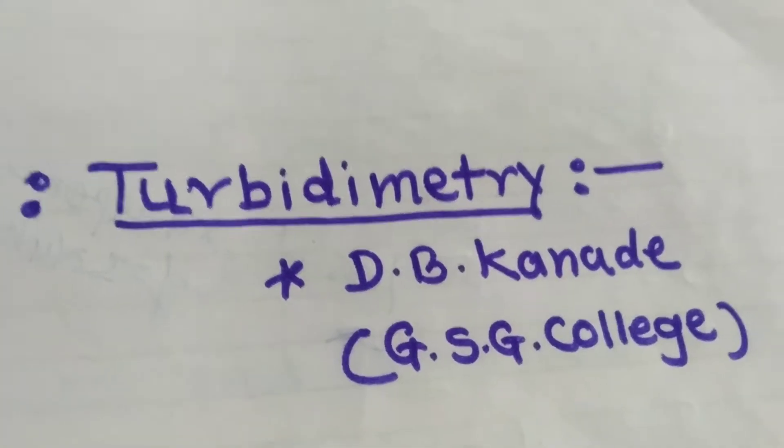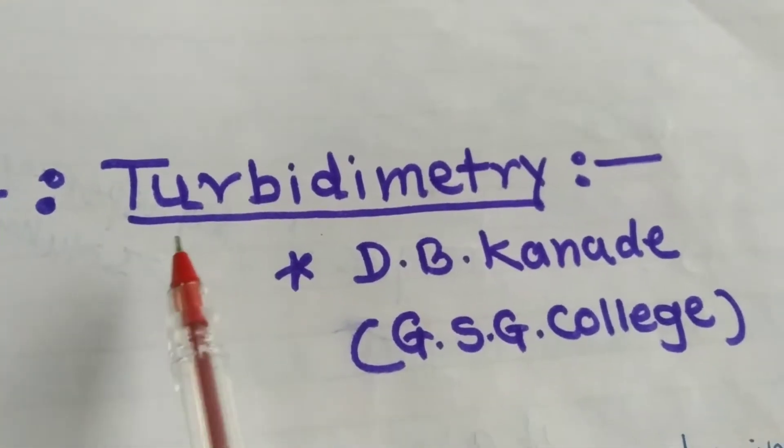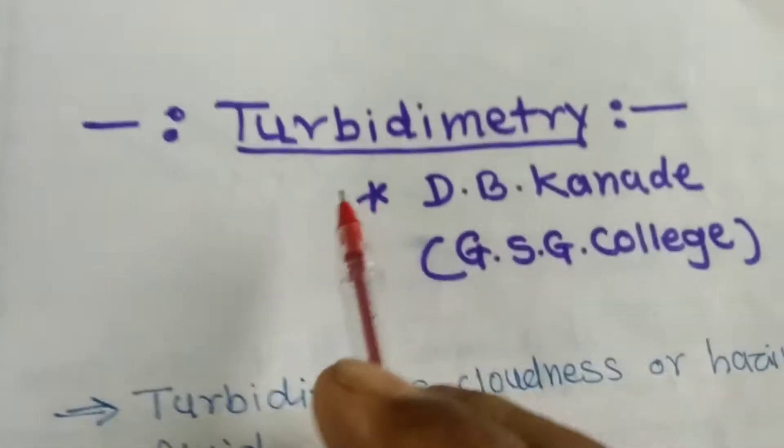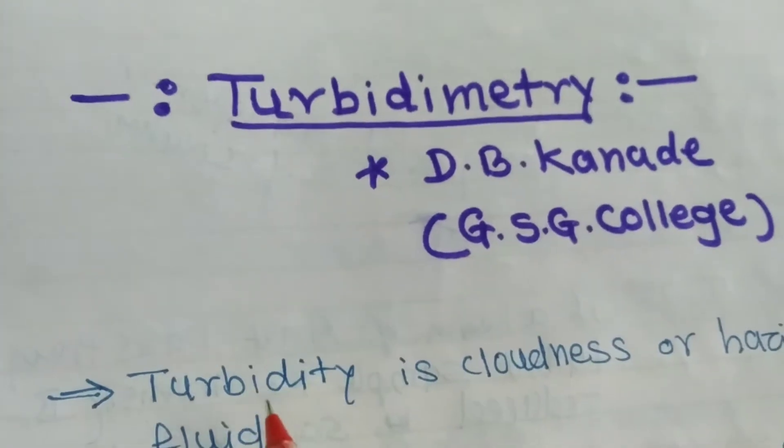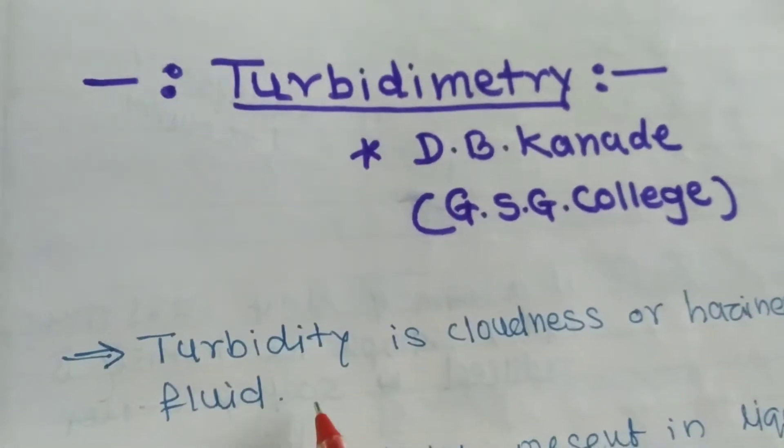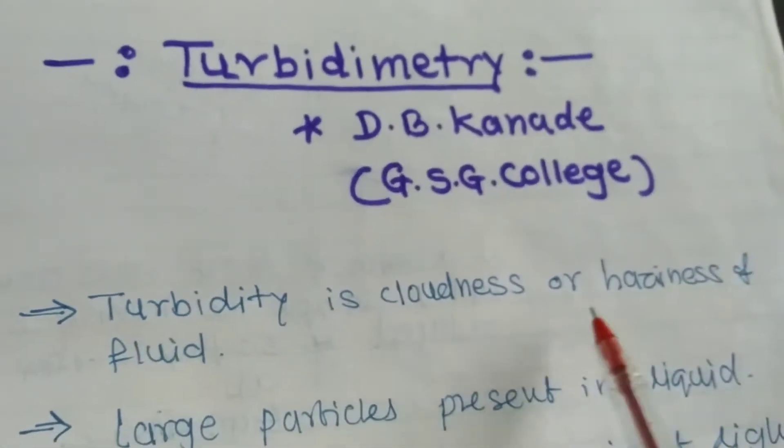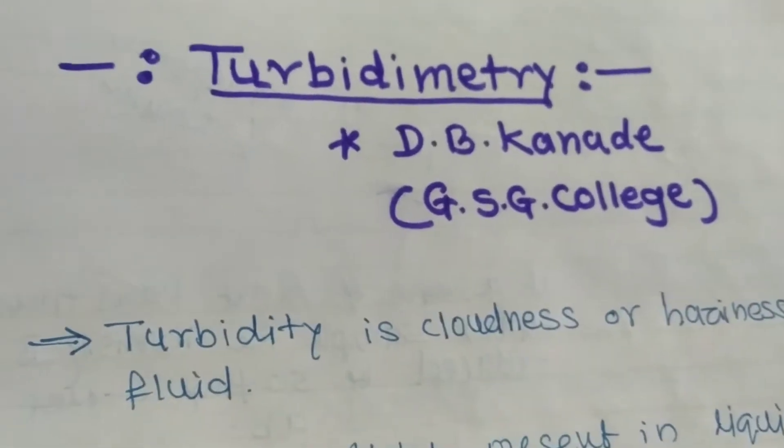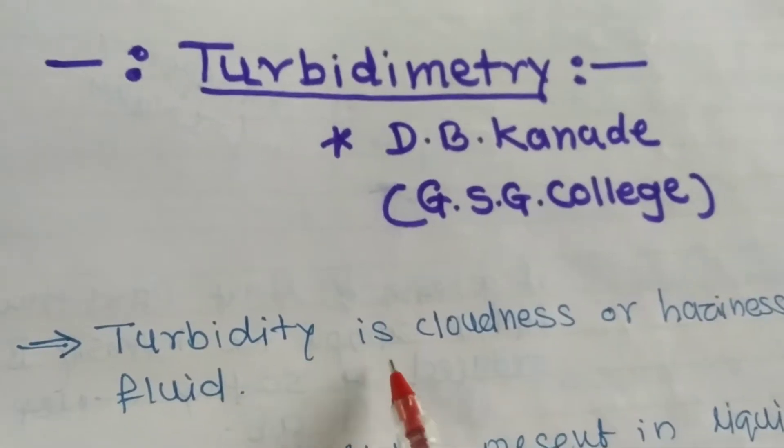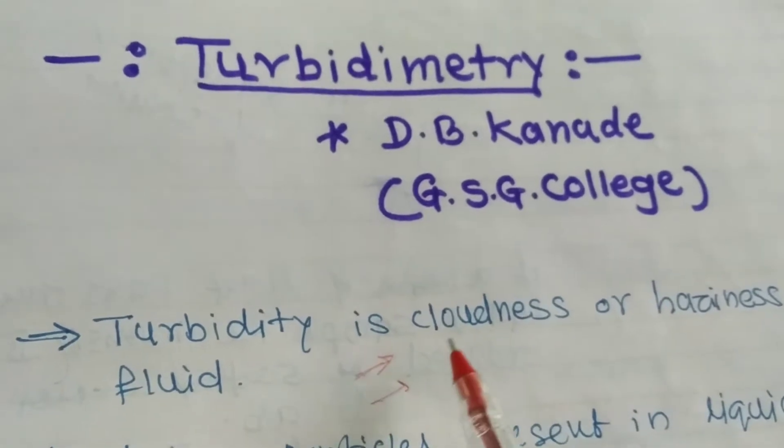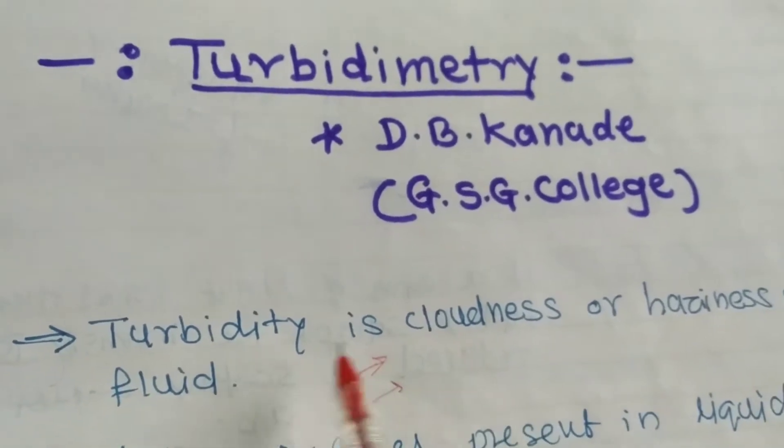The next optical method is turbidimetry. Turbidity is the cloudiness or haziness of the fluid. We see clear water samples and some samples that are cloudy in nature, which is turbidity.